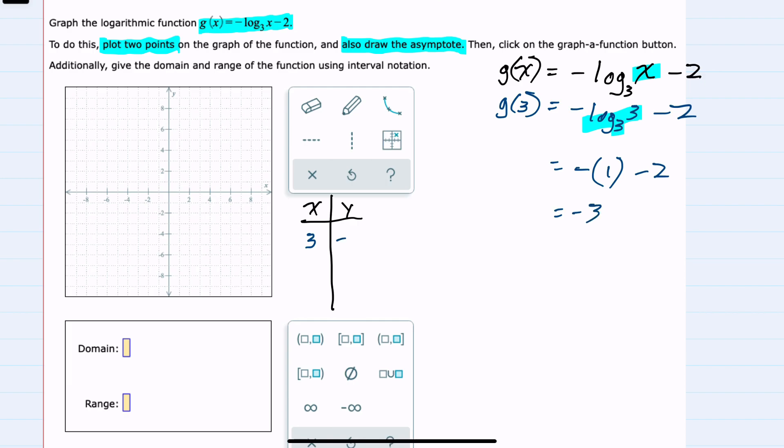So our first point is (3, -3). Graphing that, I can move on to another value for x that's easy to substitute. This time I'll use 9, because when I substitute the 9 in for x, it gives me a logarithm that's easy to evaluate.